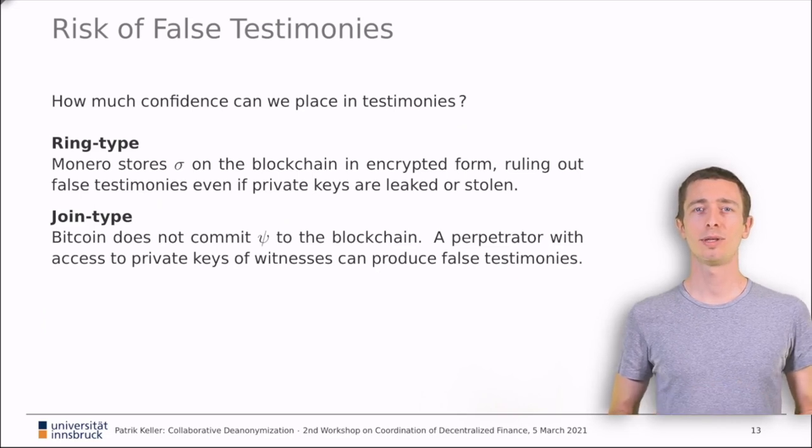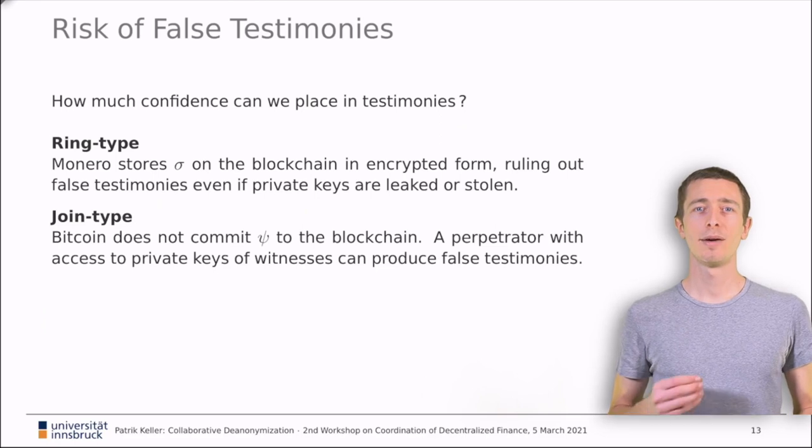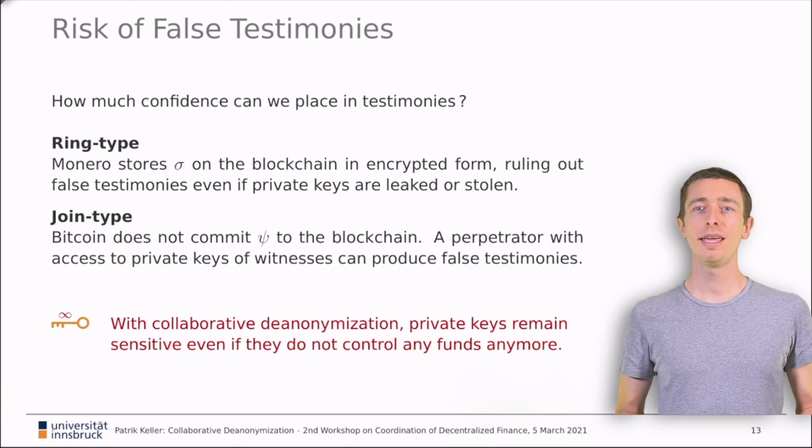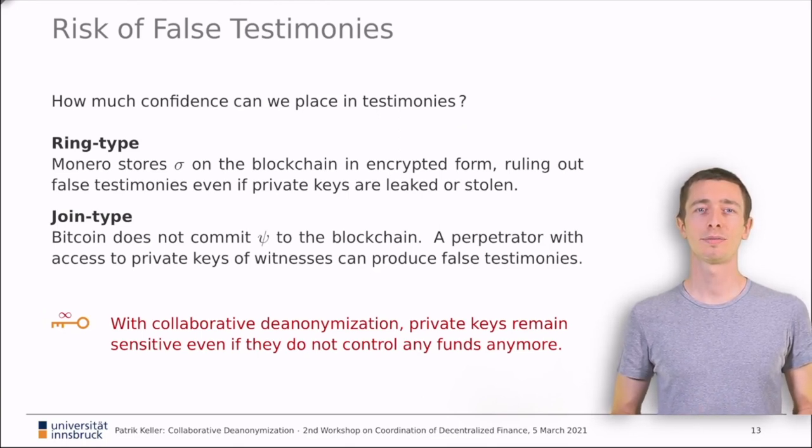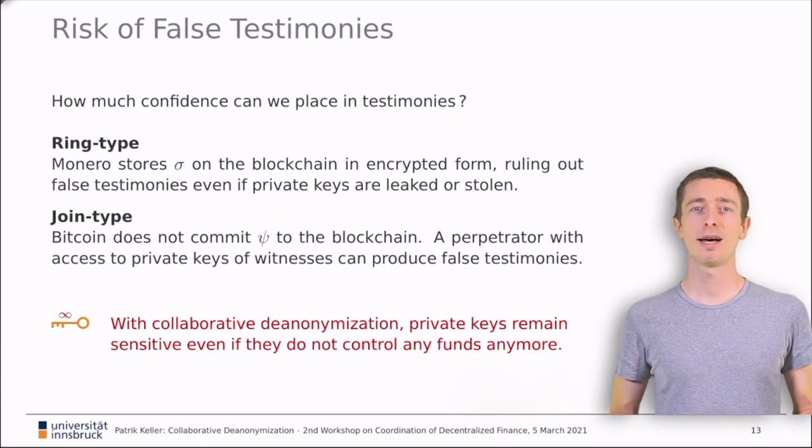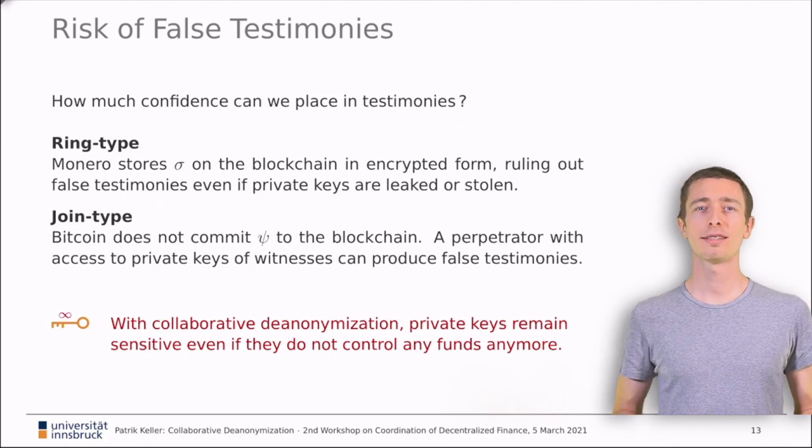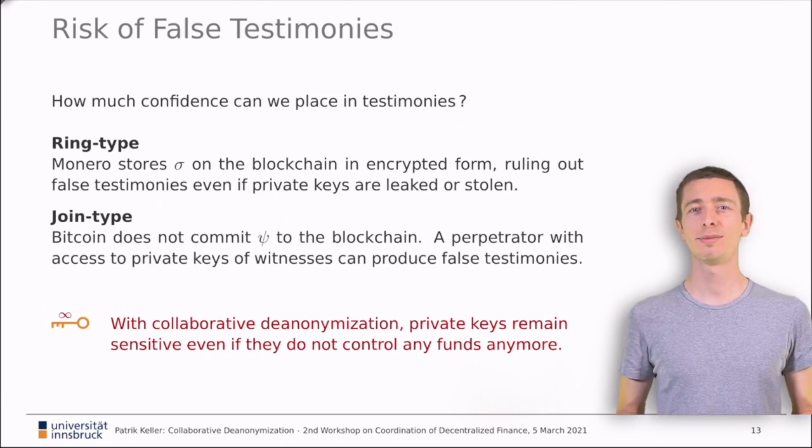Here, the public ledger does not record a commitment of the permutation psi. Hence, a perpetrator gaining access to a witness's private key can frame this witness with a false testimony. Independent of the type of transaction, we want to note that under collaborative de-anonymization, private keys remain sensitive even if they do not control funds anymore. Witnesses can use their private keys to enable enforcement of bad crimes in the future, even if there is no collaborative de-anonymization protocol in place yet. For joint type transactions, the situation is quite daunting. Criminals can use private keys of their mixing partners to produce false testimonies. Serious criminals might try to compromise benign participants' keys. In addition, a false testimony unfolds its full power if there is no conflicting true testimony. Thus, in the end, there might be a small physical risk when participating in coin-joints today.